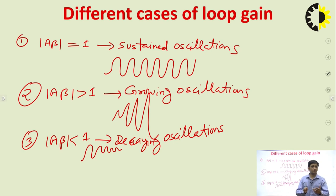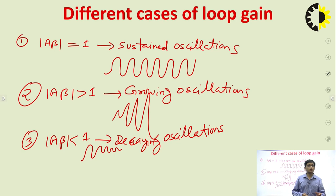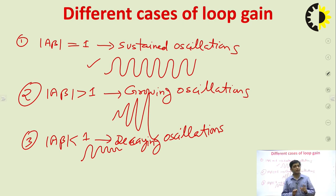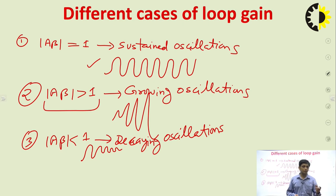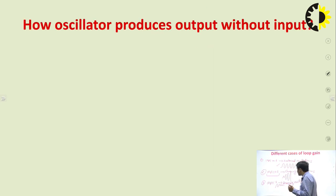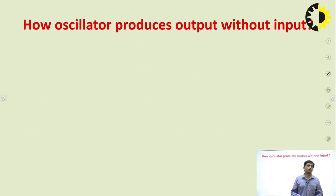If you want a sine wave on the CRO, you want sustained oscillations, so mod A·beta should equal 1. However, when designing any oscillator circuit at the start, we set mod A·beta slightly greater than 1 — this is important to start the oscillations. Once oscillations are started, the circuit adjusts itself to mod A·beta equal to 1, giving sustained oscillations.